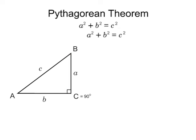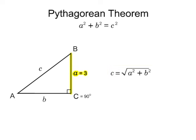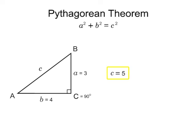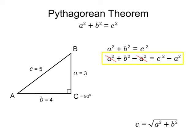For example, to solve for C, simply take the square root of both sides. This leaves the equation C equals the square root of A-squared plus B-squared. If side A equals 3 and side B equals 4, then C will equal 5. The equation can also be rearranged to find either of the other two sides.